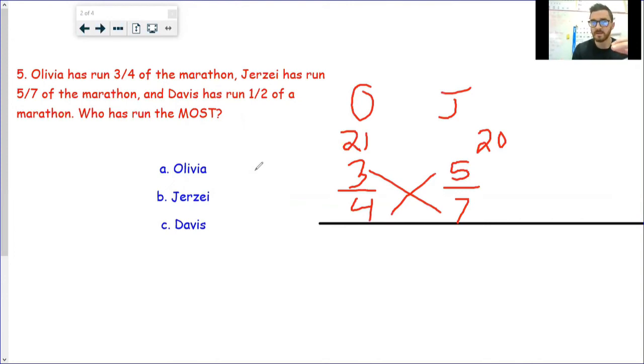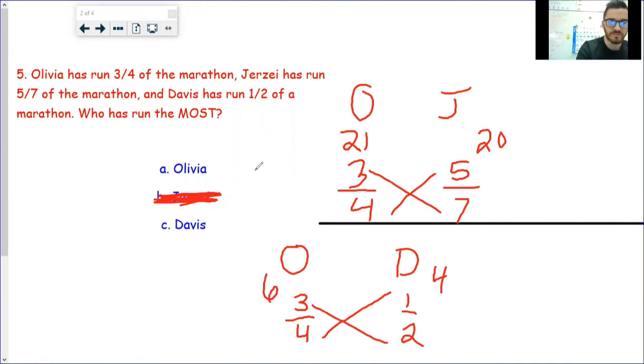I got Olivia, I got Jersey. Olivia ran 3/4, Jersey ran 5/7. So I'm going to compare their two totals. Bottoms up: four times five is 20, seven times three is 21. I need to know who ran the most. Looking at 21 and 20, comparing those fractions, Olivia ran more than Jersey. That doesn't mean Olivia is the answer. That just means Jersey's eliminated. Then I'll take Olivia's 3/4 again. This time I'll compare it with Davis's 1/2. Bottoms up: four times one is four, two times three is six. Olivia's total, her fraction represents the most. It's the greatest fraction. So that answer would be A.